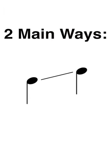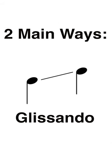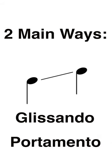In music, it's possible to slide between two different pitches, and we have two main ways of doing that: the glissando and the portamento. The difference between these two is subtle but distinct, which I'll get to at the end of the video.